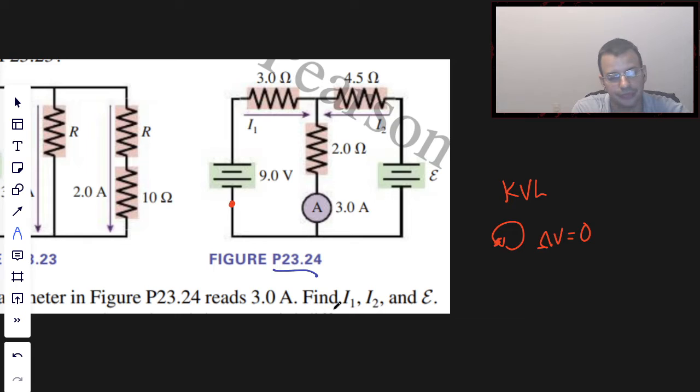And we can start wherever we want. I'm going to start right here. And so when we go across the battery, we're going to have 9 volts. These are all going to be measured in volts, so I'm just going to write 9. We go across the resistor, and since we're going in the direction of current, we're going to have a voltage drop, so we're going to subtract it, minus I1 times 3, because this is just Ohm's law, V equals IR.